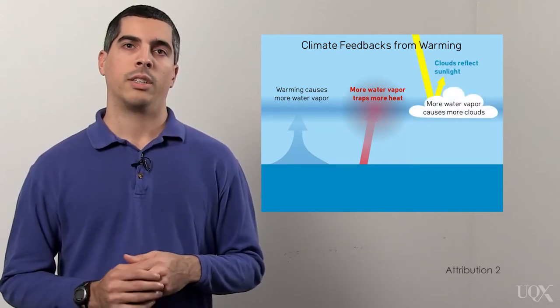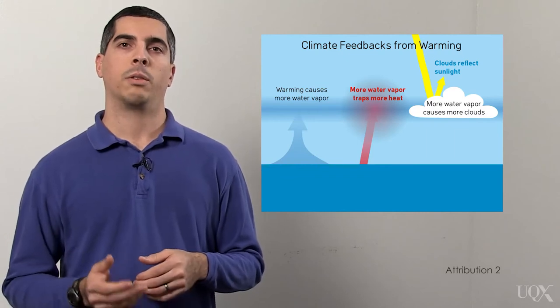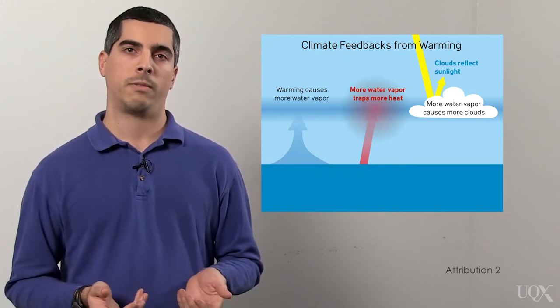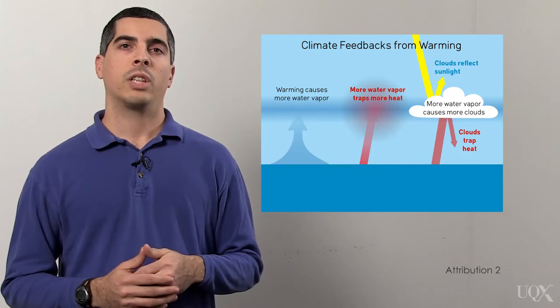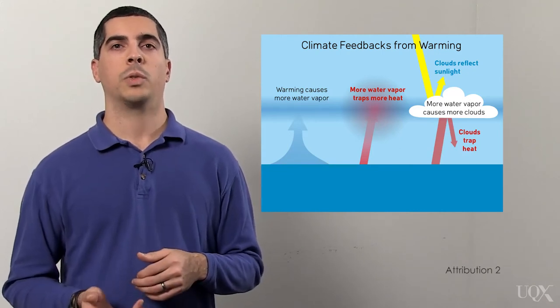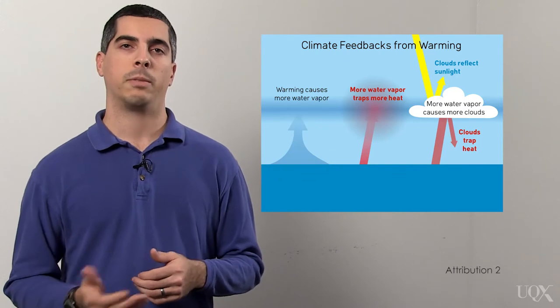Clouds are especially complicated. Changes in cloud cover can mean more reflection of sunlight, a dampening feedback. But changing clouds can also trap more heat, since they also contribute to the greenhouse effect, which is an amplifying feedback.